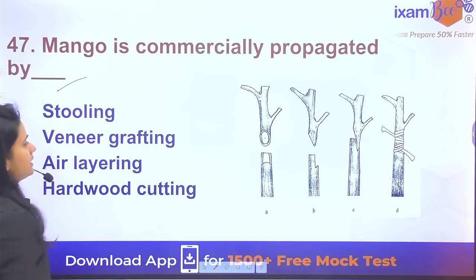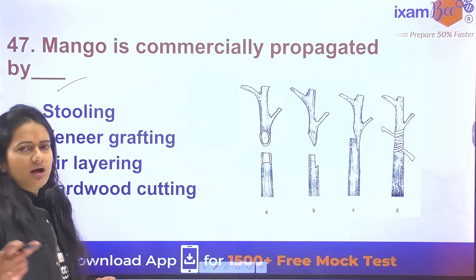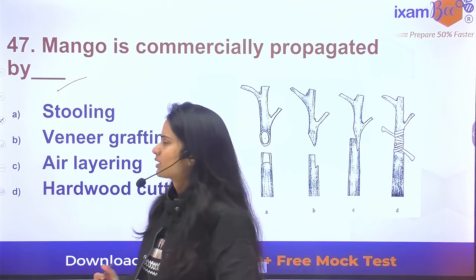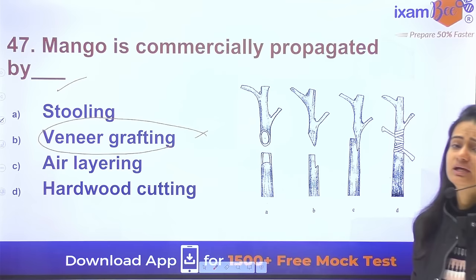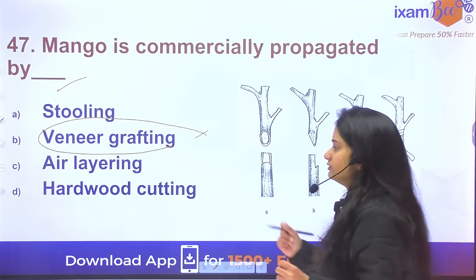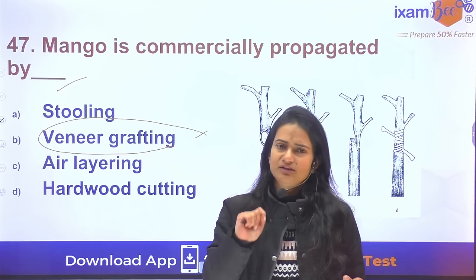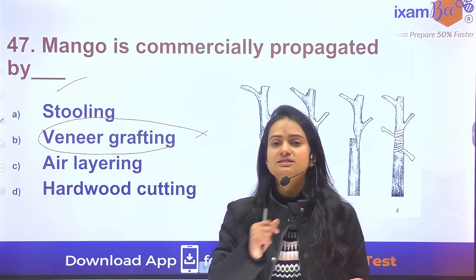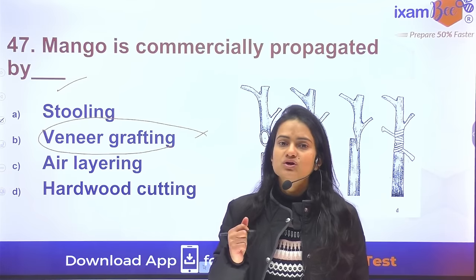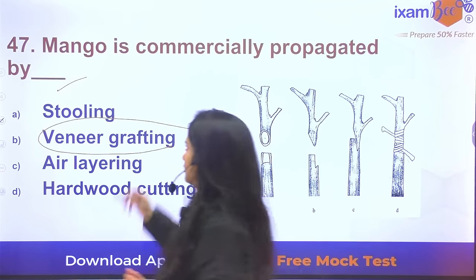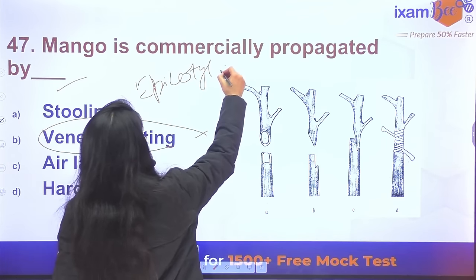Question 47: Mango is commercially propagated by veneer grafting. In addition, the fastest method of grafting in mango — as asked in NFL — is epicotyl grafting.